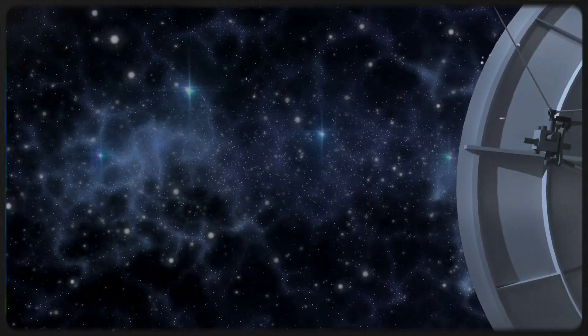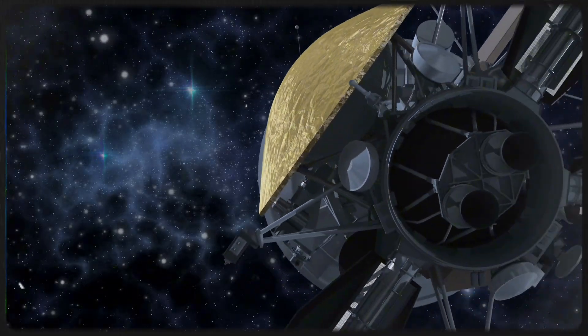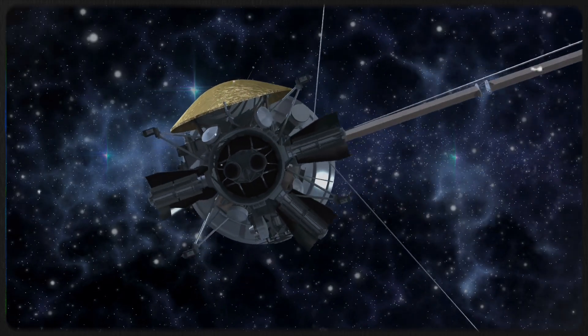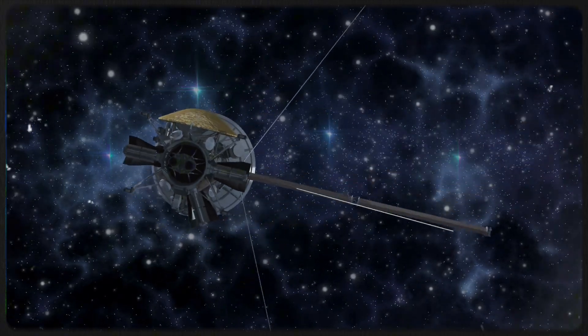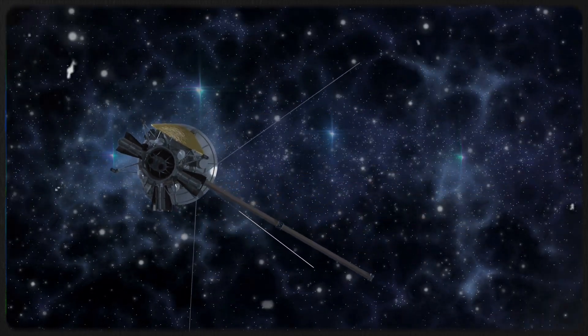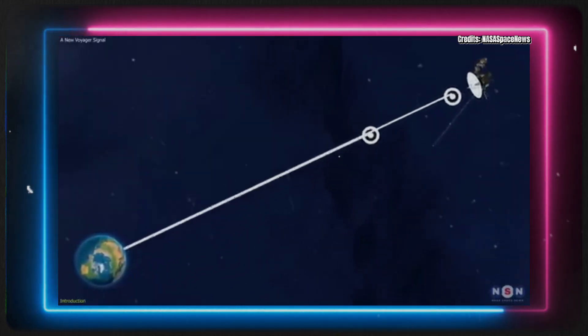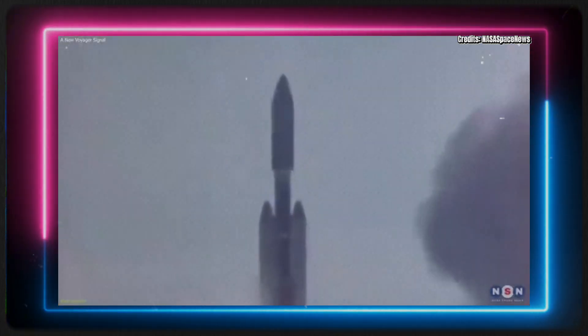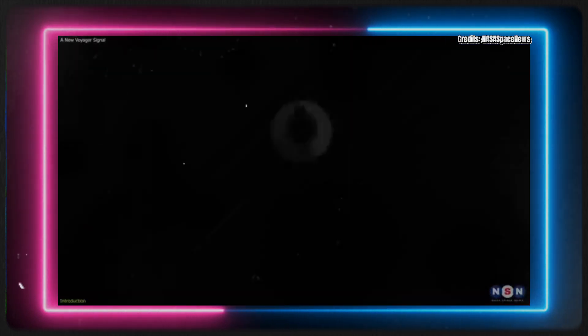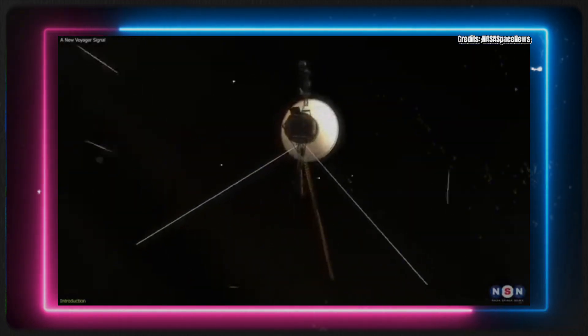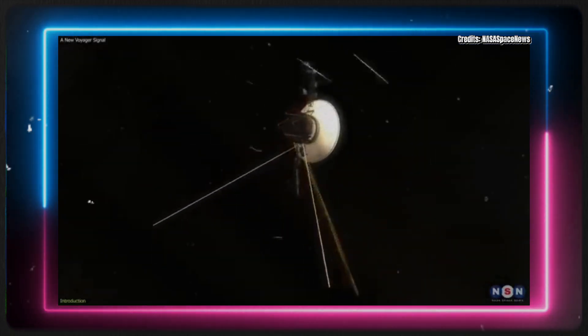Interestingly, even with the occasional false signals, Voyager 1 remains robust. It's reassuring that its antenna is still correctly oriented towards Earth, evidenced by the steady radio signal which indicates the probe's proper positioning despite inaccuracies in location data. The fault protection system, designed to safeguard the spacecraft in case of a malfunction, hasn't been triggered by the current issues.